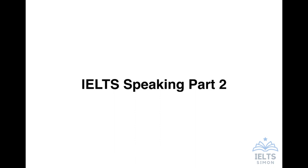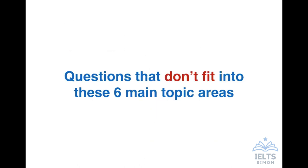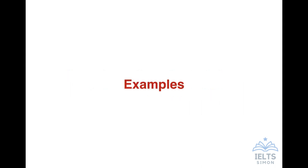This is the last in my series of video lessons about IELTS Speaking Part 2. I've already done lessons about the six main topic areas: describe a person, place, object, event, activity, and your favourites. We've covered those, but what about questions that don't fit into these six main topic areas? What do you do if you have a question that doesn't seem to be one of these six main areas? Let's have a look at some examples.